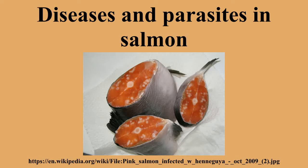Henneguya and other parasites in the Myxosporean group have a complex life cycle, where the salmon is one of two hosts. The fish releases the spores after spawning. In the Henneguya case, the spores enter a second host, most likely an invertebrate, in the spawning stream. When juvenile salmon migrate to the Pacific Ocean, the second host releases a stage infective to salmon.